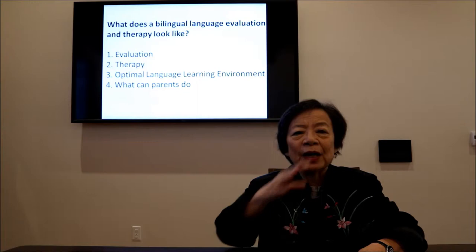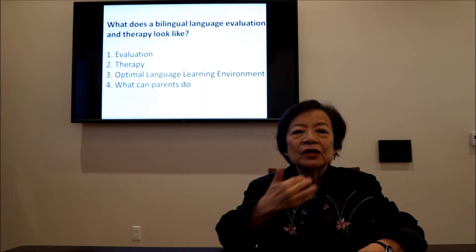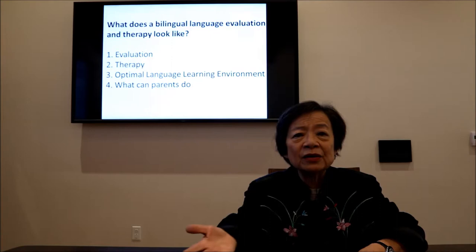Let's say we have difficulty with the sound 'f' — one, two, three, four, five. We need to show the placement of the upper teeth on the lower lip: four, five. And in Mandarin we have 'fa' and 'fu', so it's very important we also help with the home language.